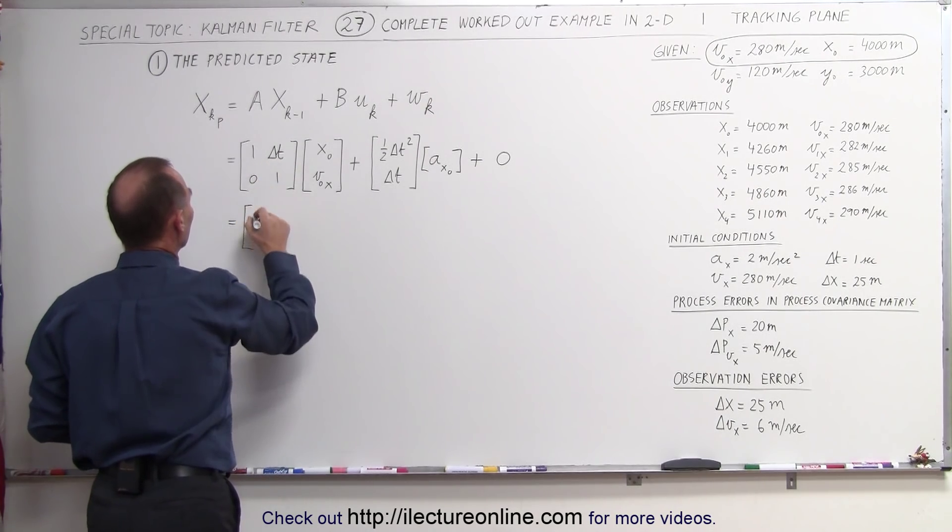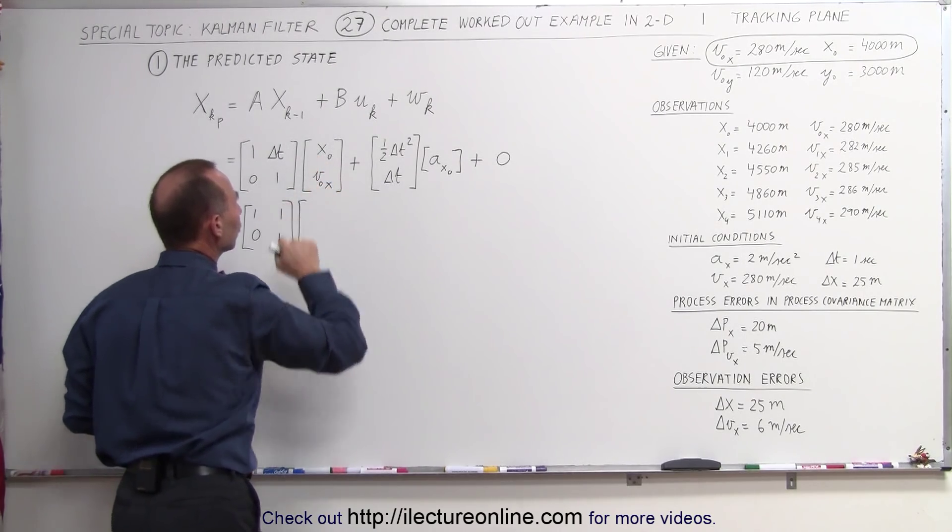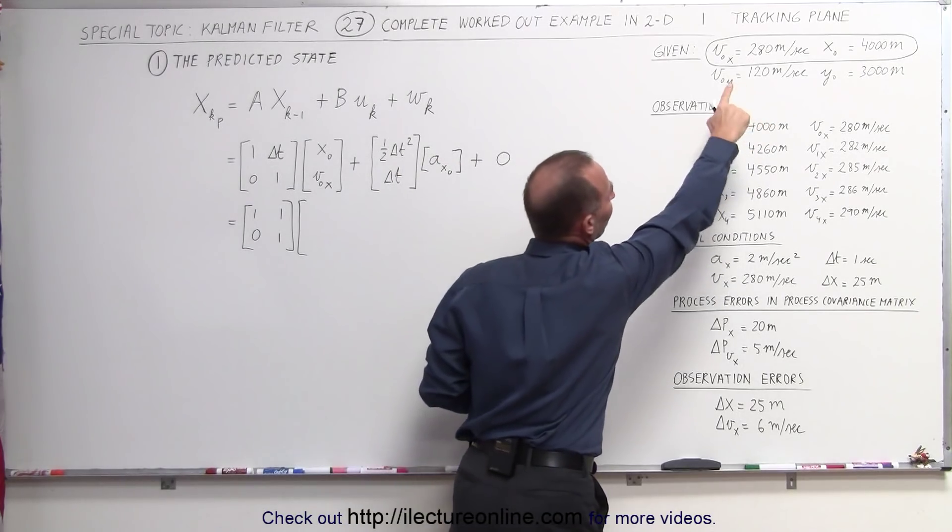Since delta t is equal to 1, this becomes a matrix that looks like this. We're going to multiply that times the initial position and the initial velocity, initial position and velocity right there.